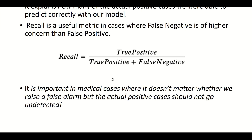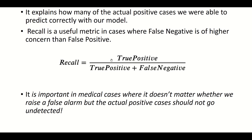Recall tells you how many of the actual positive cases your model was able to predict correctly. The actual positives include true positives and false negatives — because false negatives are cases you said were negative but were actually positive. So recall is: true positive divided by true positive plus false negative.